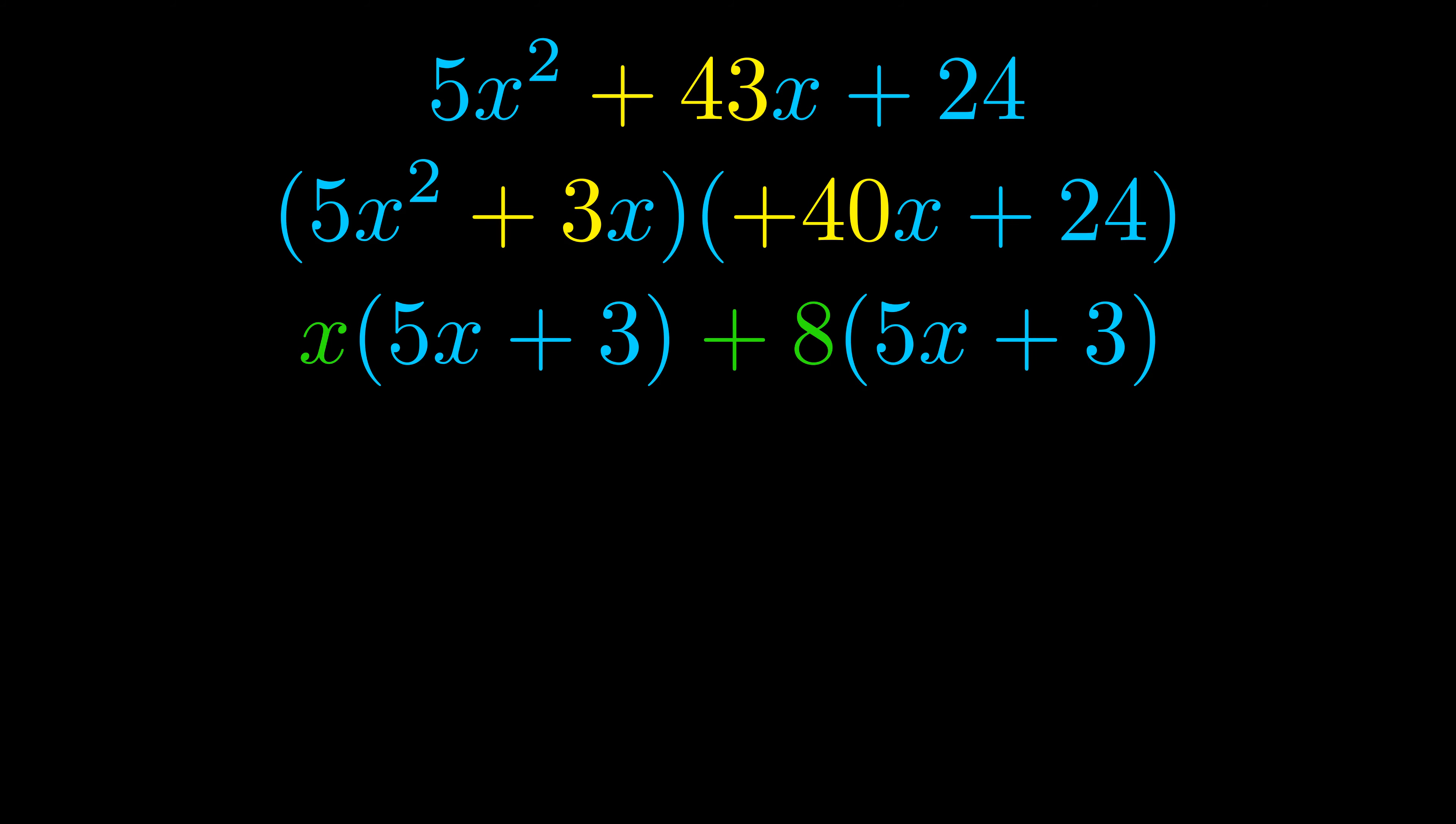Notice also how what remains inside of the parentheses is the same in both cases. The blue values are the same. Those blue values will become one of our factors and we will combine the two green values, the GCFs that we pulled out, to get the other one. And that is our fully factored equation.